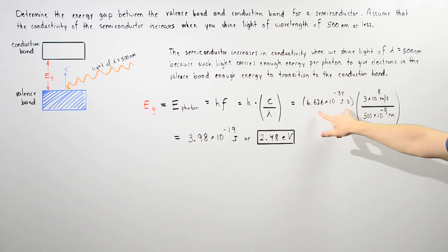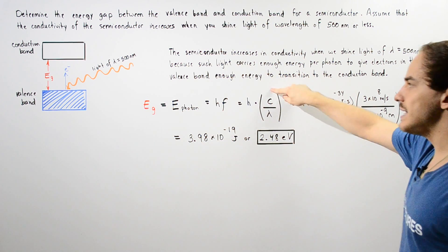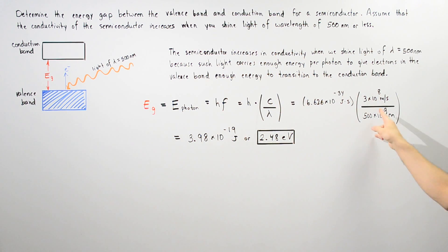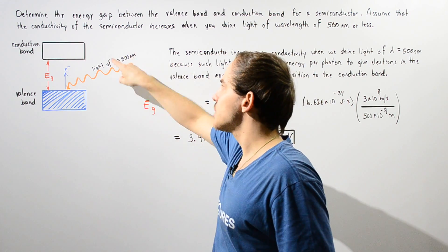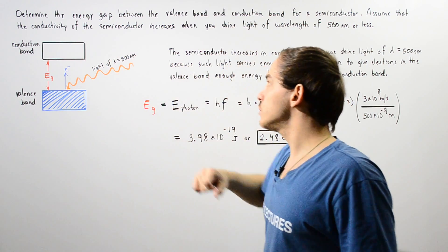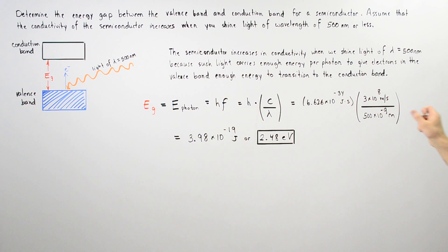So h is Planck's constant, it's given by this value. c is the speed of light in a vacuum, it's given by this value. And our wavelength in nanometers, in meters, is 500 multiplied by 10 to the negative 9 meters.